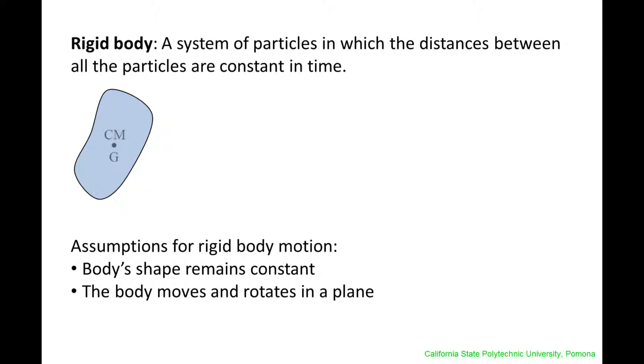The center of mass of the rigid body is often denoted by the symbols CM or G. Rigid bodies may translate, rotate, or a combination of both.